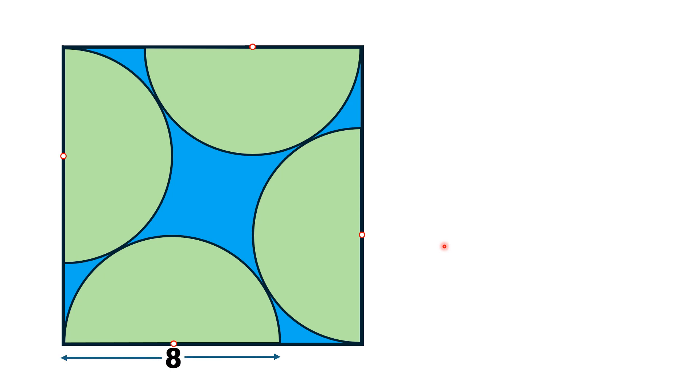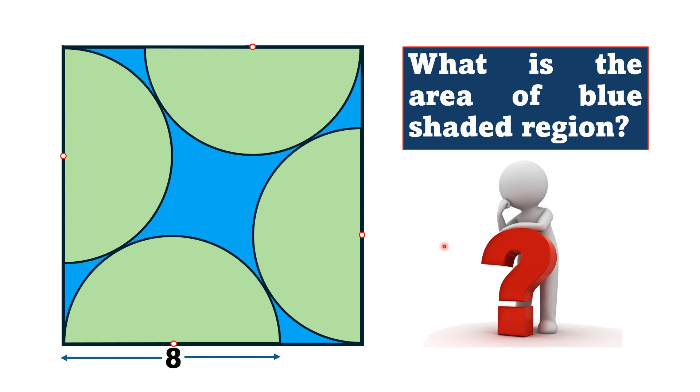If the diameter of each semicircle is 8 units, then by this limited data we have to find the area of blue shaded region.